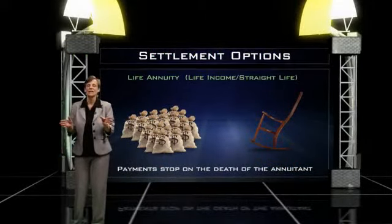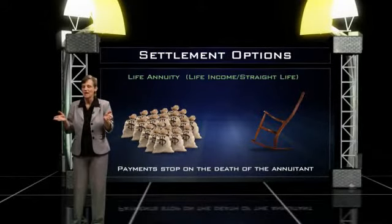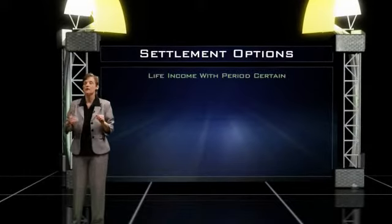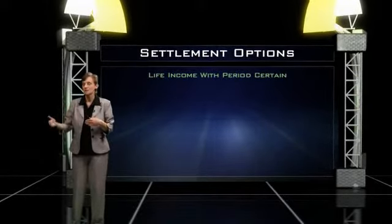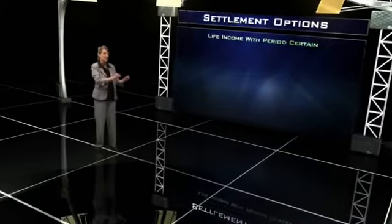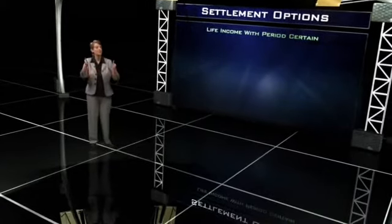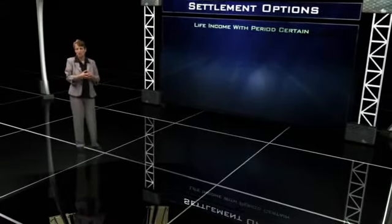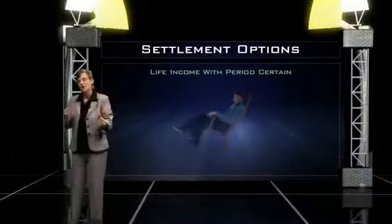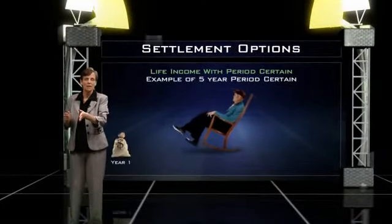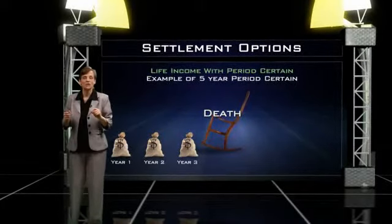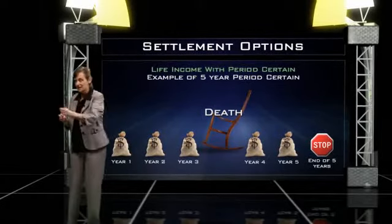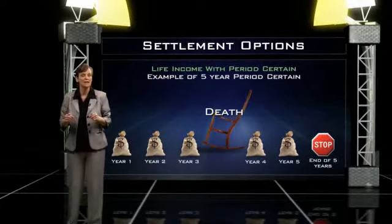Some people don't like the idea that if they were to die, the insurance company would get to keep the rest of the money, so they want some kind of a minimum guarantee. When the account is annuitized, the annuitant could choose life with period certain. The insurance company would continue to pay them for as long as they lived; however, if they died before the end of that period certain, the insurance company would have to continue making payments to their beneficiary. For example, if an annuitant chooses life with a five-year period certain and dies after only three years, the insurance company must continue payments to the beneficiary for the remaining two years. If the annuitant didn't die but continued to live past those five years, they would continue receiving payments.